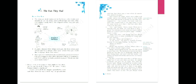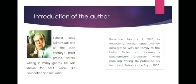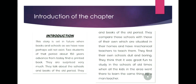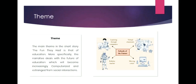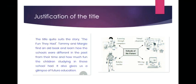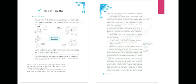We will start the chapter's line-by-line explanation in the next class. Till then, you have to complete all these things. Take your copy, put the heading, and write two to three lines about the author — whatever you feel is suitable. Also write the introduction of the chapter, it will help you a lot. Theme and title justification are asked in exams these days, so I have mentioned them — write them down. Please complete all the notes so that we may start the chapter from the next class.